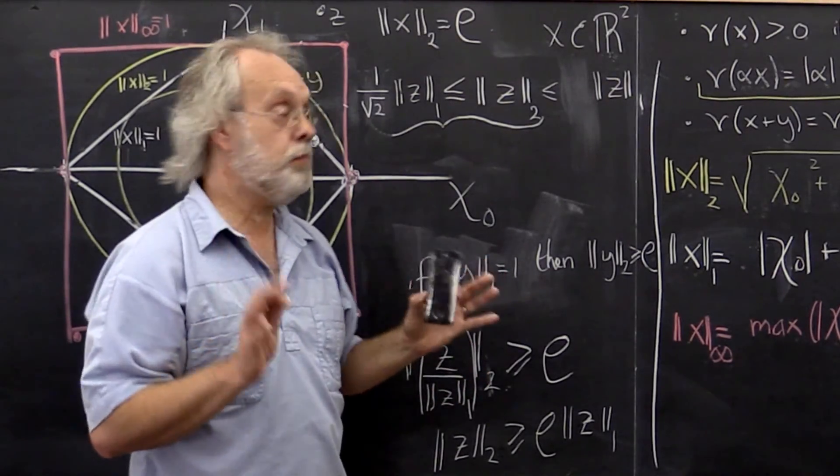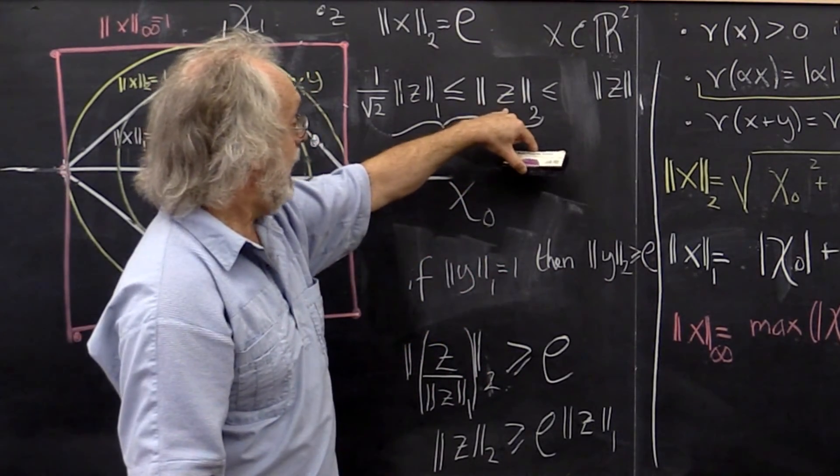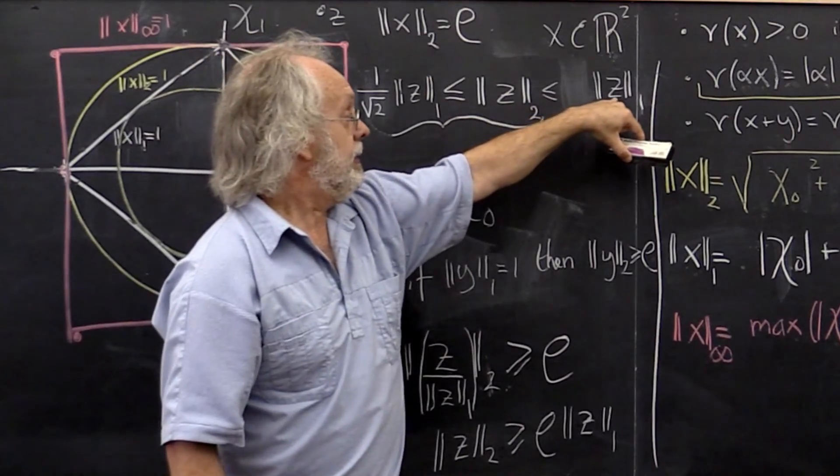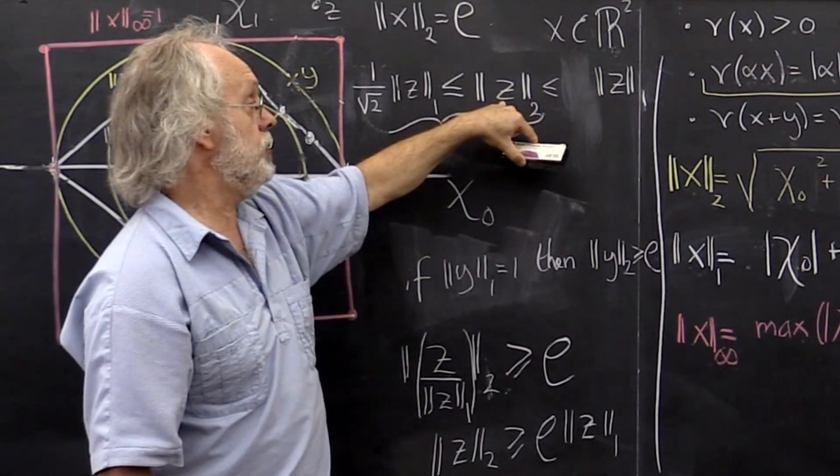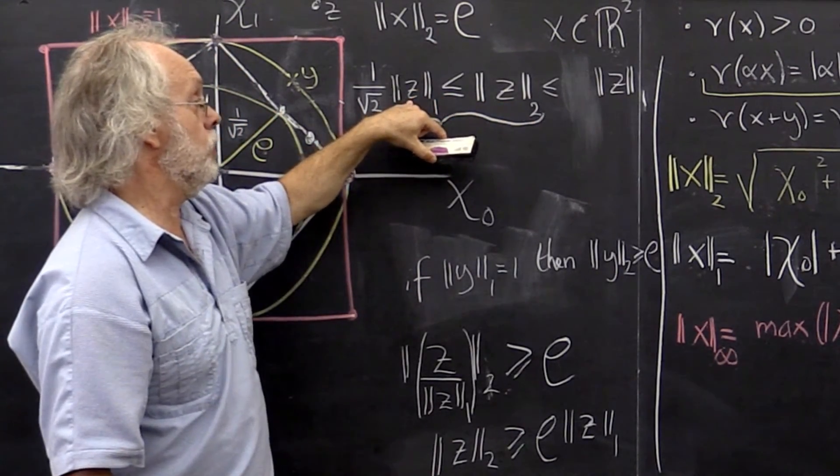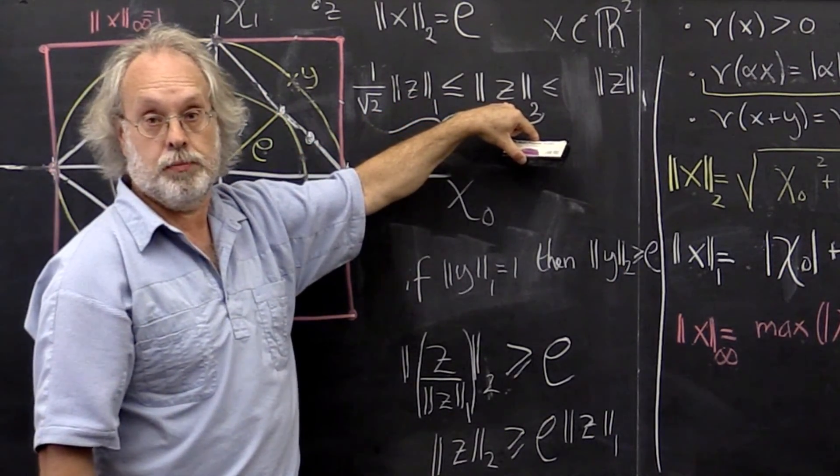But the important point is, now it's the case that if a vector is small in the 1-norm, then it's small in the 2-norm. And if a vector is large in the 1-norm, then it's large in the 2-norm.